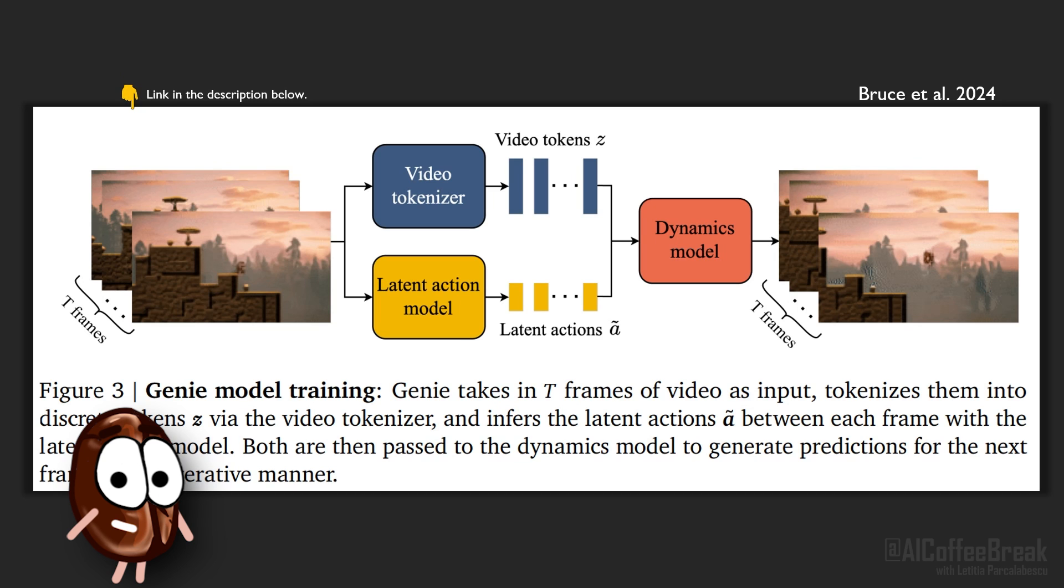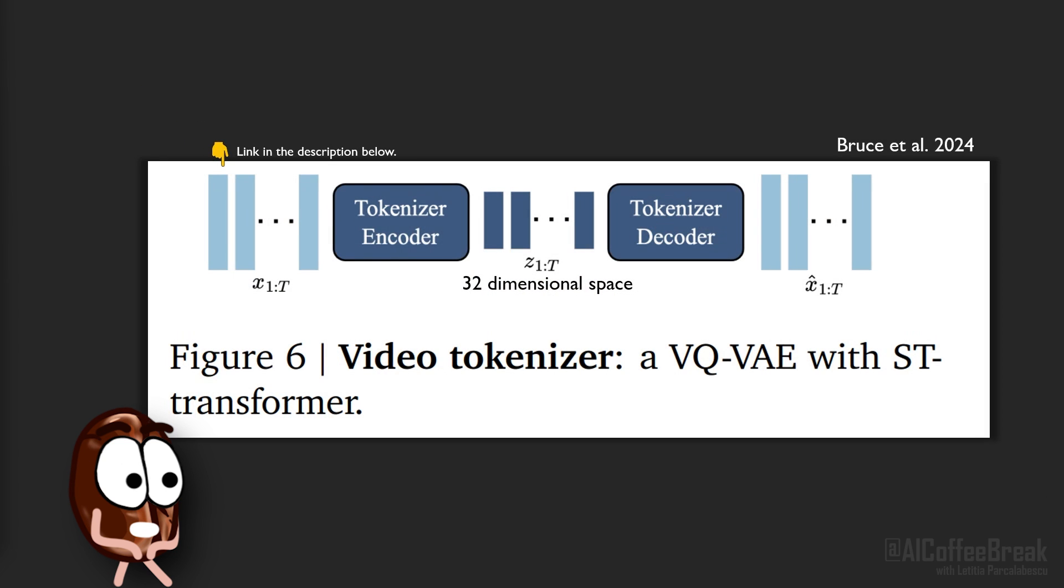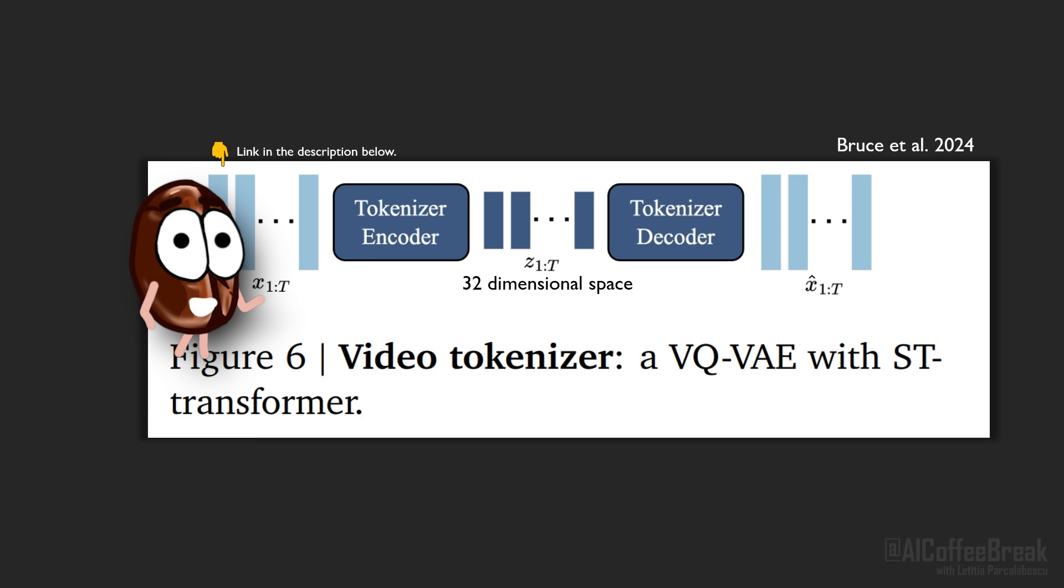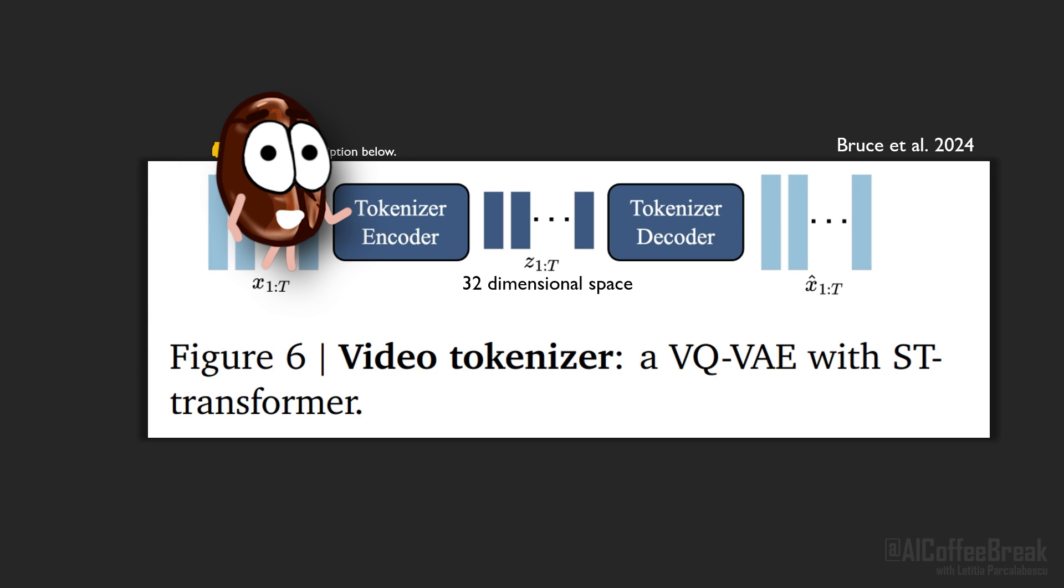The video tokenizer is an autoencoder which works like this: it takes in T frames of video, so T images. An encoder which has an ST-transformer architecture, which we'll explain in a bit, reduces the dimensionality of the input frames.